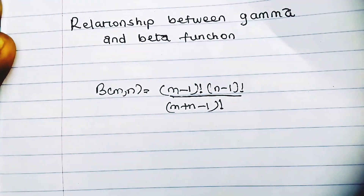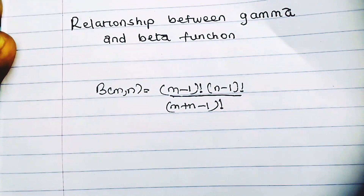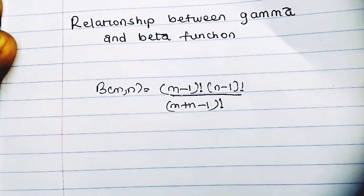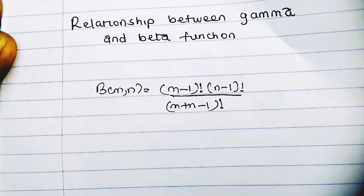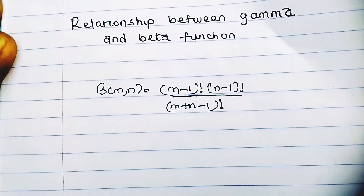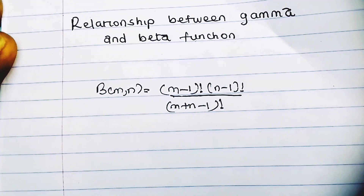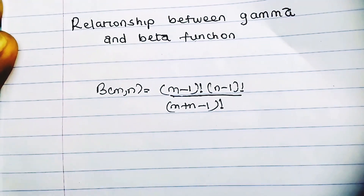This relationship we are going to derive is going to help us solve problems when we are given the beta of fractions. I showed you how to calculate the gamma of fractions in the last video on gamma functions. We don't yet know how to calculate the beta of fractions, so this formula I'm deriving will help us calculate, for example, beta of 1/2 and 3/2, and so on.